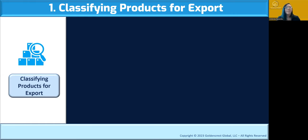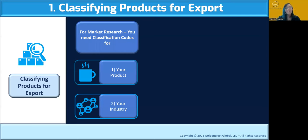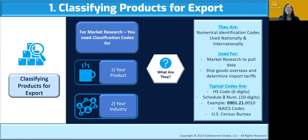Let's start with Topic 1: classifying your product for export. Whenever you export or do market research, you have to classify your product — meaning you get a code for your product so you can pull data and so customs knows what you're shipping. It's needed for market research, and classification codes are required for your specific product. If you have multiple products — like coffee and tea, or organic versus non-organic tea — you'll have different codes. Everything is coded, and that's how you're able to pull relevant data.